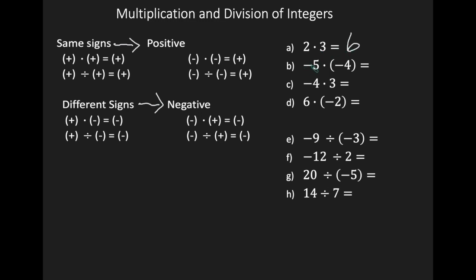Suppose we have negative 5 times negative 4. Your signs are the same, so your answer is going to be positive. You're going to multiply 5 times 4, which is 20, so your answer is positive 20.